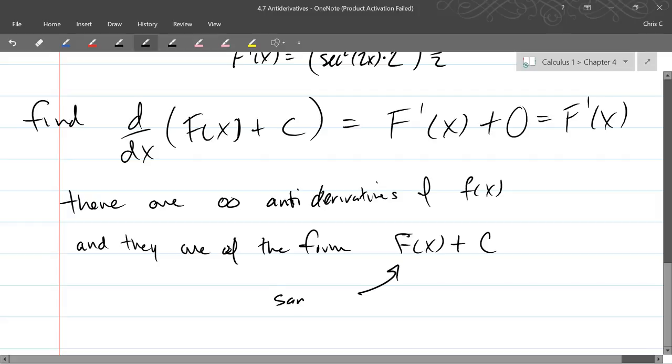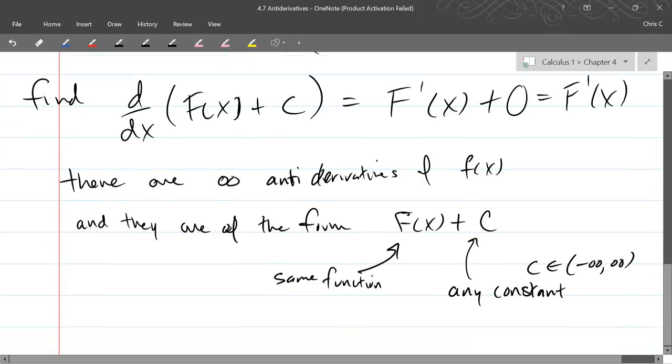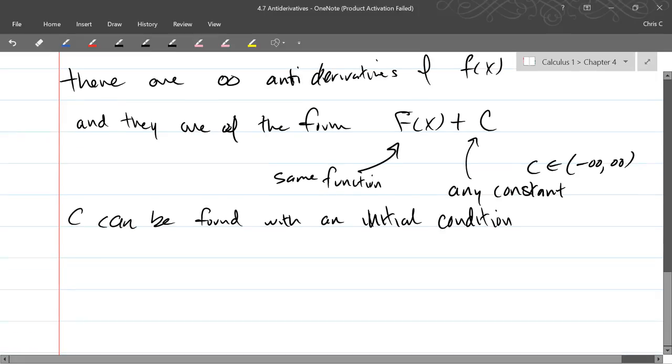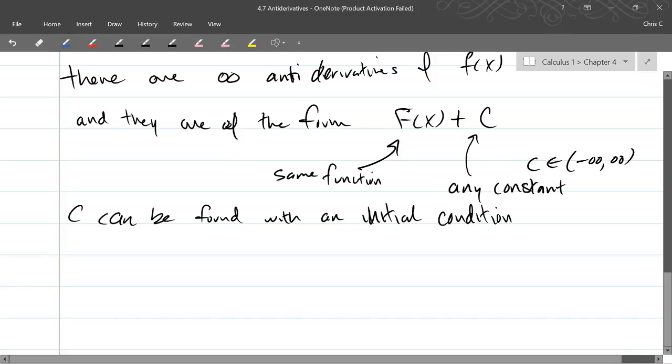Is there a way to narrow it down? Yes. With initial conditions, basically. So f of x will be the same function, and c can be any constant. So c can be anywhere from negative infinity to positive infinity. And what we're going to do is, with an initial condition, we'll be able to figure out what c is.